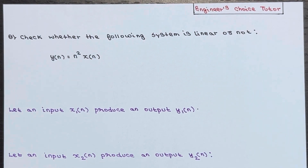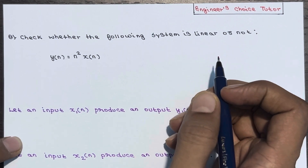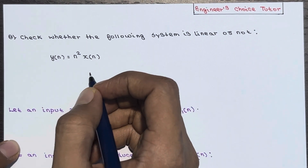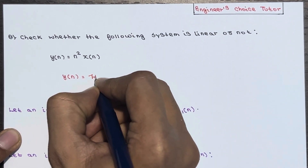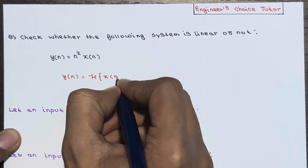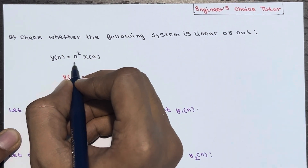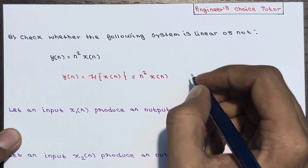Hi everyone, in this lecture we will be discussing another numerical based on linear and nonlinear systems. The question is: check whether the following system is linear or not. The equation is given as y(n) = n² · x(n). Generally, y(n) is the transform of x(n), and from this equation, y(n) = n² · x(n).